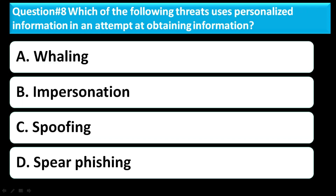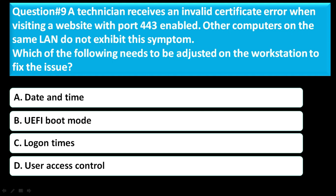Question 8: Which of the following threats uses personalized information in an attempt to obtain information? Option A: whaling. Option B: impersonation. Option C: spoofing. Option D: spear phishing. The correct answer is D — spear phishing.